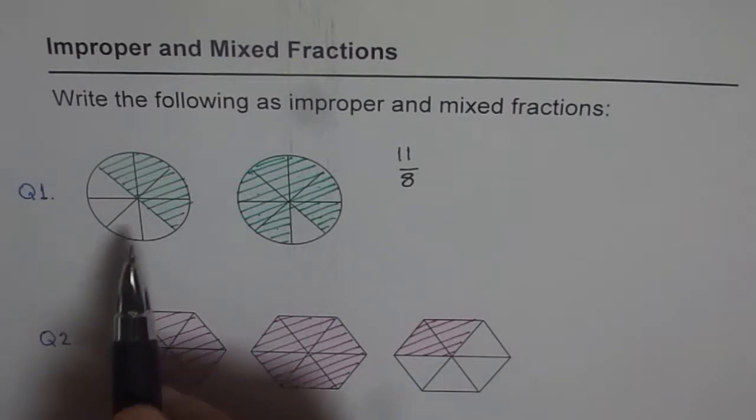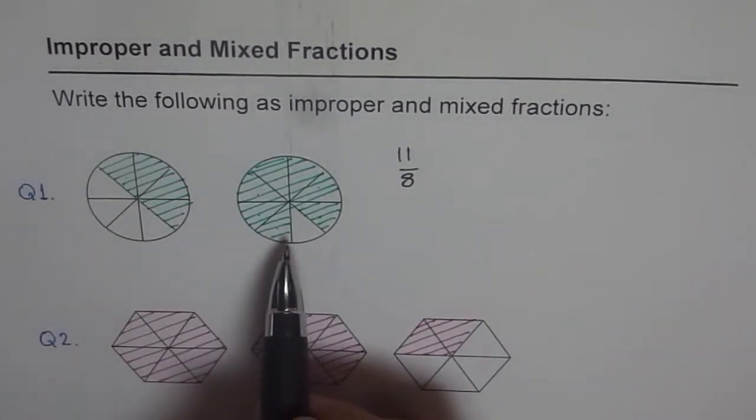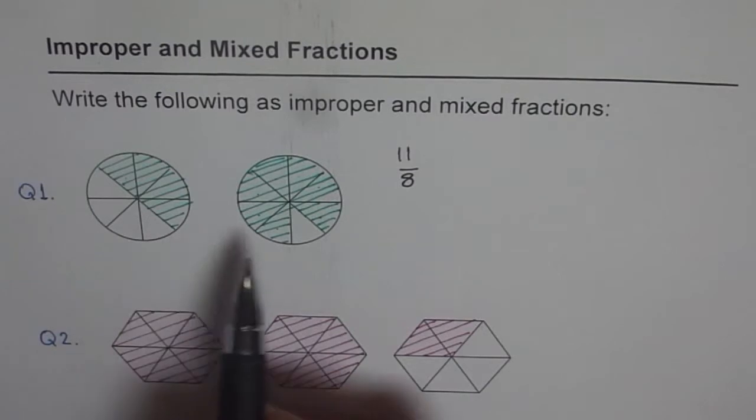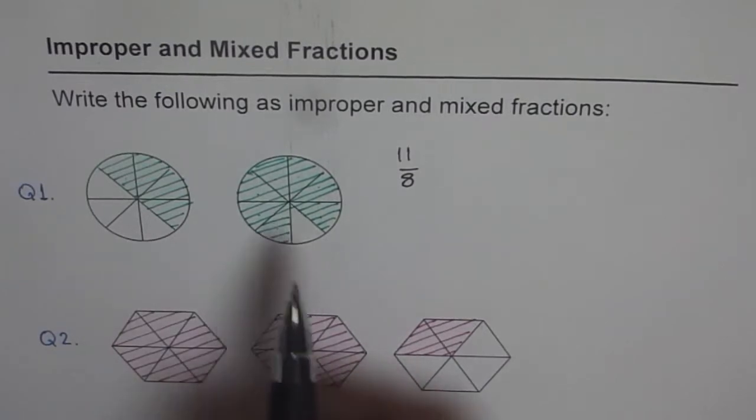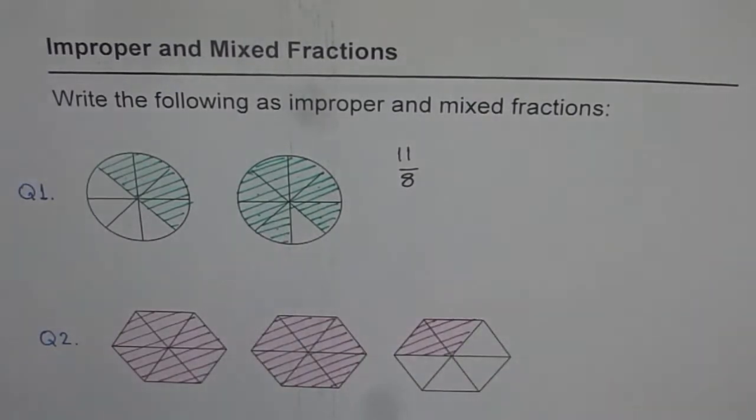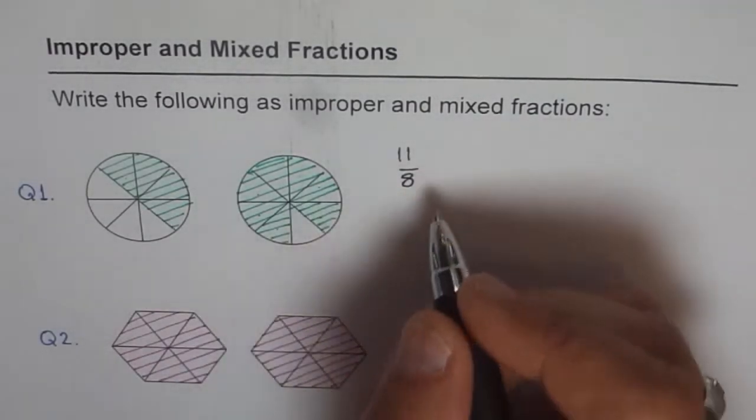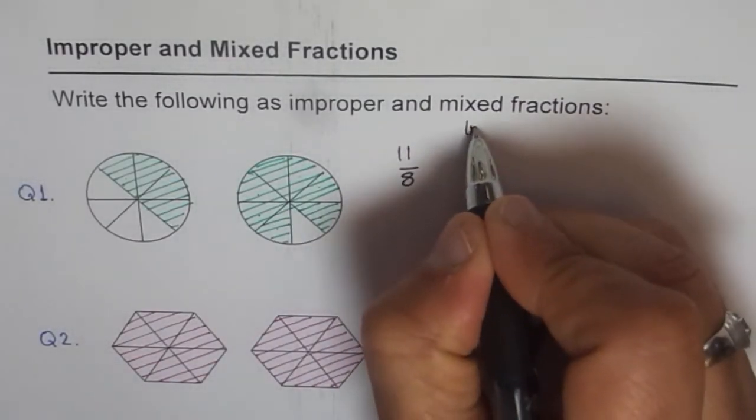Why is numerator greater than denominator? We are actually considering two wholes, not just one. So when you consider more than one whole, then you get improper fraction. That is how you get improper fraction. So this is improper fraction.